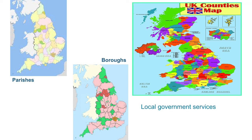Most of the numerous services that a modern government provides are run at local level in Britain. These include public hygiene and environmental health inspection, the collecting of rubbish from outside people's houses and the cleaning and tidying of all public places. They also include the provision of public swimming pools which charge admission fees, and public parks, which are mostly just green grassy spaces but often contain children's playgrounds and playing fields for sports such as football and cricket, which can be reserved in advance on payment.